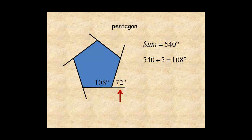With five exterior angles, the sum of the exterior angles is 360 degrees. This is true for all polygons — regular or not, no matter how many sides they have, the sum of the exterior angles is always 360 degrees.